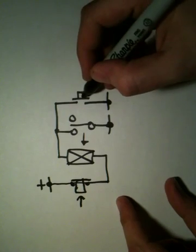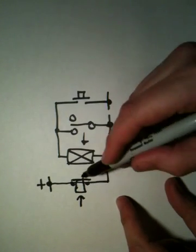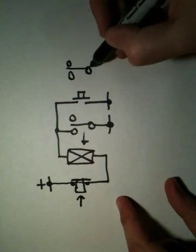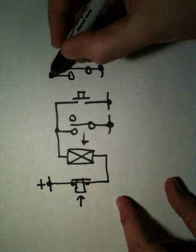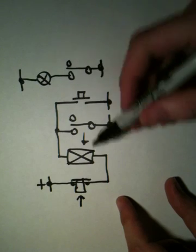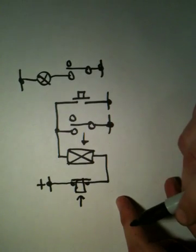So press this one, we'll turn the relay on. Press this one, we'll turn it off. Then you can have some other contacts over here, maybe this contact goes to a light. So you have one push button that turns the light on and another push button that turns the light off.